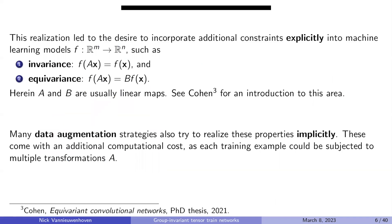It was realized this is a good idea: explicitly encoding constraints into machine learning models. If your model is a function from input space to output space, you can consider invariance constraints: applying a linear map A to the input gives the same result as just applying f to x. This is called an invariance relation in the machine learning literature.